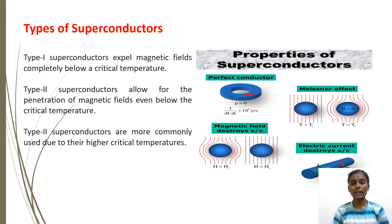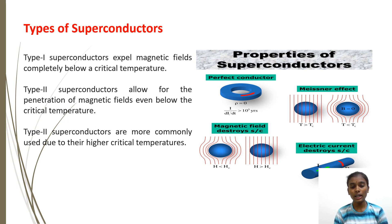There are two main types of superconductors: Type 1 and Type 2. Type 1 superconductors lose their superconducting properties when subjected to a strong magnetic field, and they expel magnetic fields completely below a critical temperature. Type 2 superconductors can tolerate higher magnetic fields before losing their superconducting properties, and are more commonly used due to their higher critical temperatures.